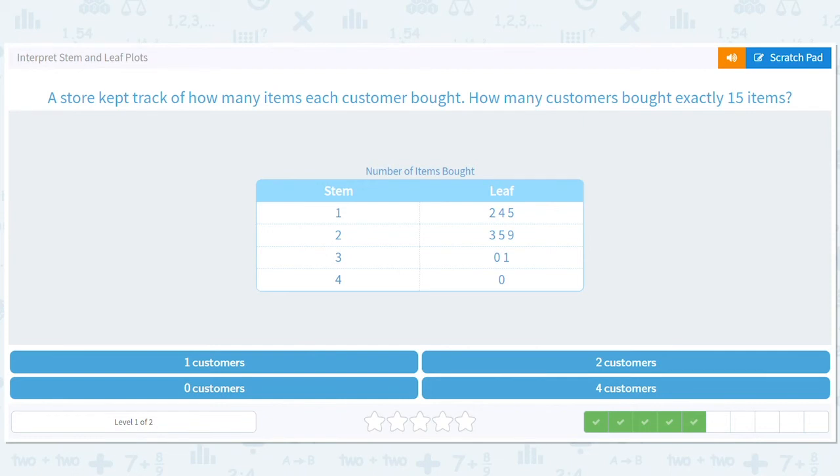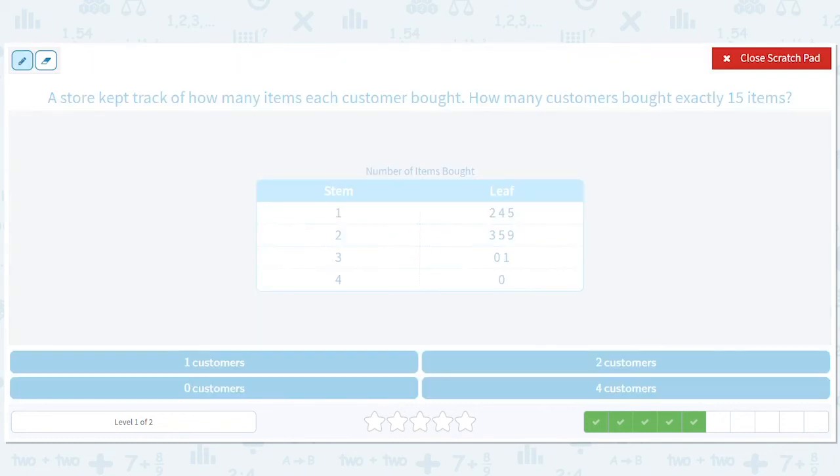A store kept track of how many items each customer brought. How many customers bought exactly 15 items? This is similar to the last question. So someone bought 12 items, some other person bought 14, some other person bought 15, some other person bought 23, some other person bought 25, and we can stop. And only one customer bought 15.